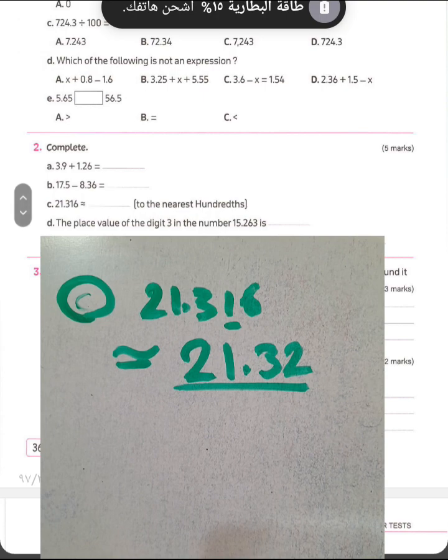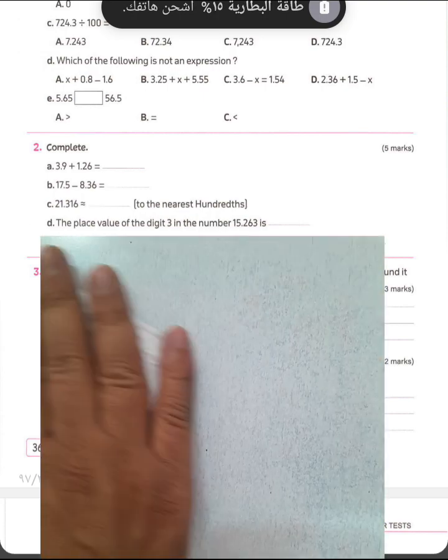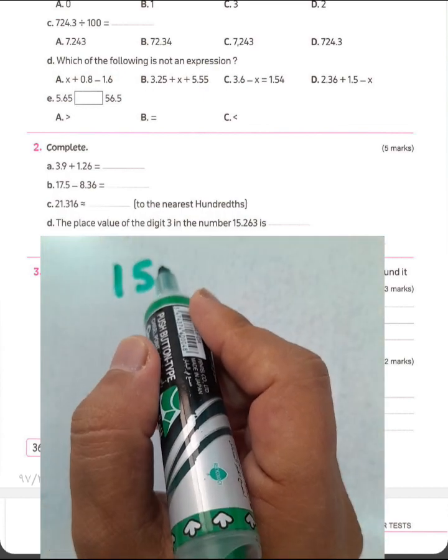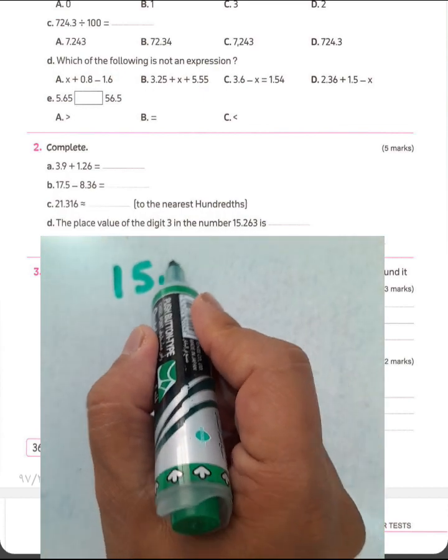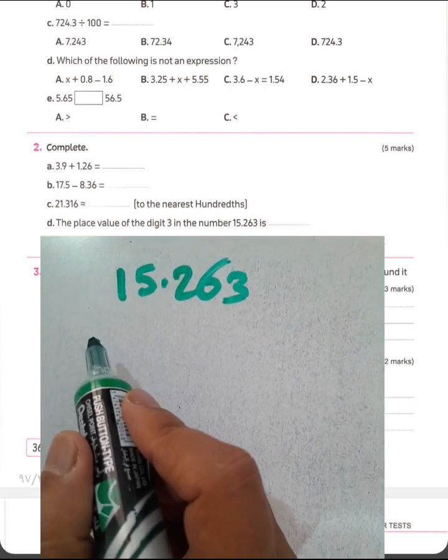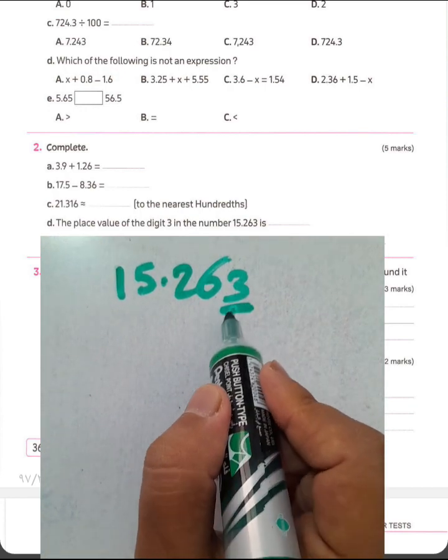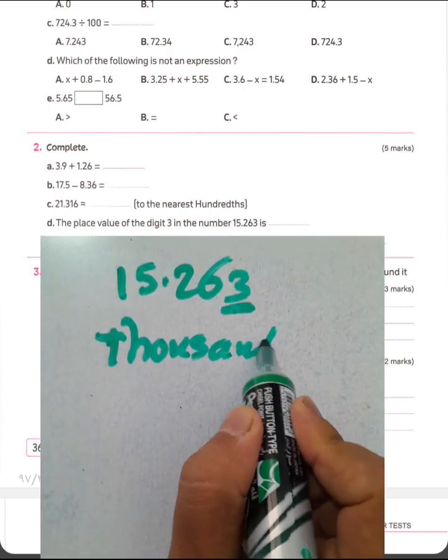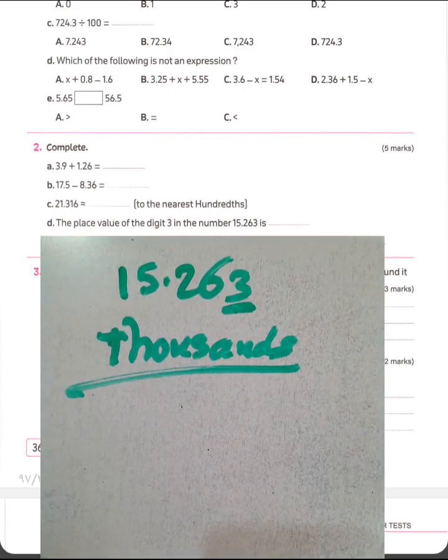Question letter D. The place value of the digit 3 in the number 15.263 is equal to what? The place value of the digit 3. 3 here is in what? In thousandths. The place value of the digit 3.